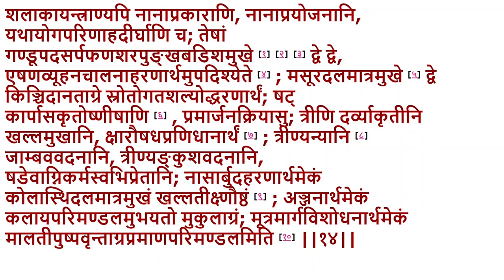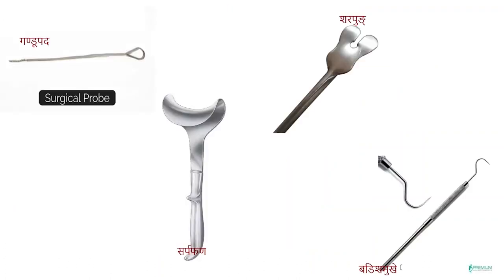A rod-like instrument used to apply medicine into the eyelids is the anjana shalaka, which has a mukulagra tip — soft as a bud. Another rod-like instrument is used not as a dilator but to clear an obstructed urethra. It is used only to remove an obstruction and clean the obstructed urethra. Now we use rigid rod-like dilators and catheters to remove urine, so there is a difference in approach.